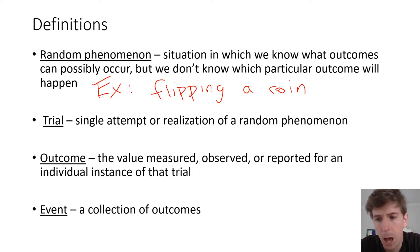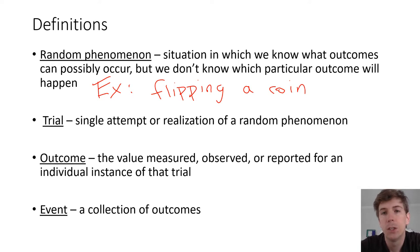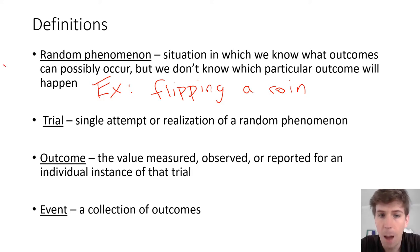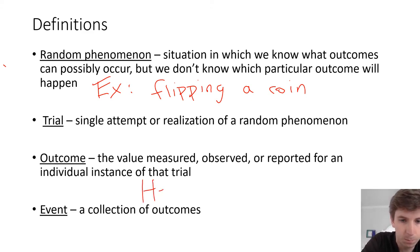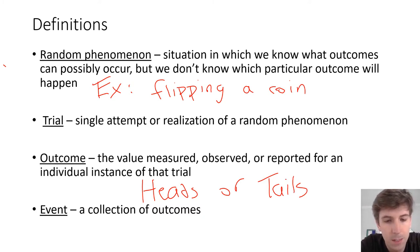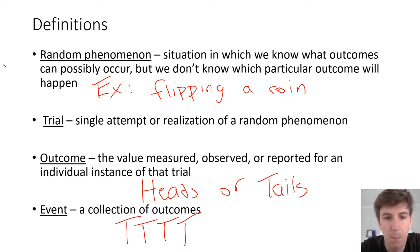Situations that would not be random, at least in a probability sense, would be if someone asked you to name the first sports team that comes to mind — it's not actually random because each person has a team they'd probably say. That would not be a random phenomenon. A trial is just a single attempt — a single coin flip. The outcome is what actually occurs — heads or tails. An event is a collection of outcomes, like getting four tails in a row.